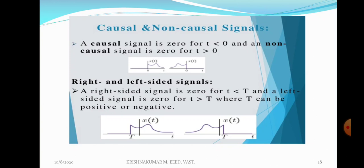What is meant by causal? A causal signal is a right-handed signal whereas a non-causal signal is a left-handed signal. For a continuous time signal x(t), x(t) is equal to 0 when t less than 0. If there is no signal when t is negative, then that signal is a causal signal. That signal exists only on the right-hand side, and therefore that causal signal is also known as a right-handed signal.